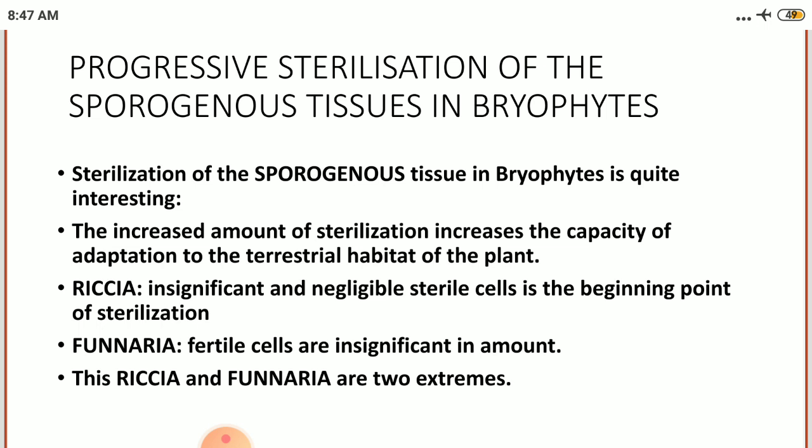In Sphagnum, which is a member of the Bryopsida, first there is formed a 5 to 12 cell filamentous embryo of which few upper cells develop into capsule while middle cells form foot and seta. The lower portion of the filament forms haustorium. In the capsule, the whole endothecium develops into the columella, which is similar to the members of Anthocerotopsida, whereas the amphithecium divides to produce outer sterile jacket and inner archesporium, that is the sporogenous cells. The sporogenous cells arch over the columella and are arranged in 2 to 4 layers, meaning only a very little portion of the capsule forms the spores.